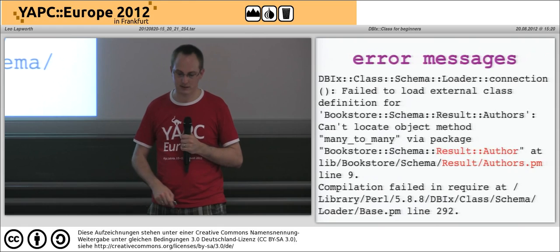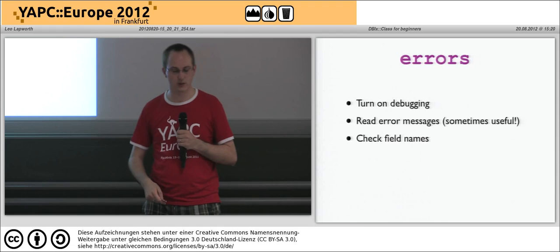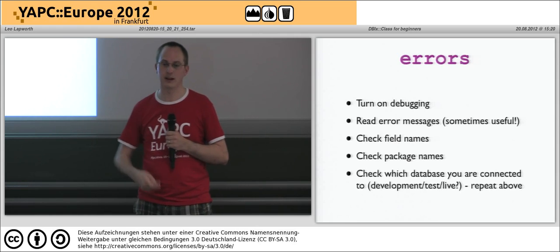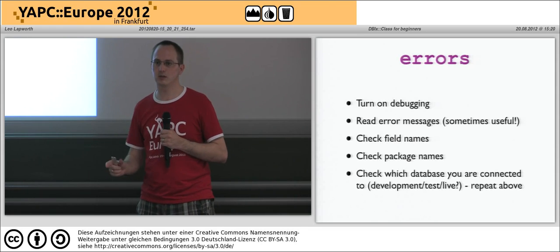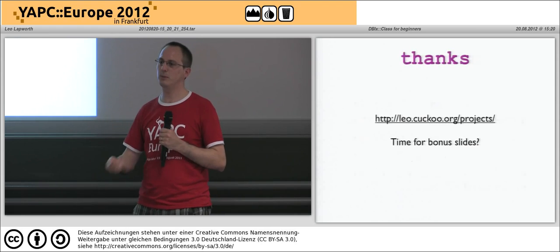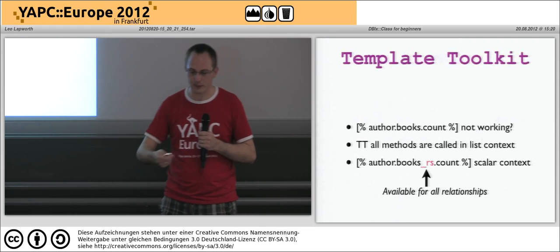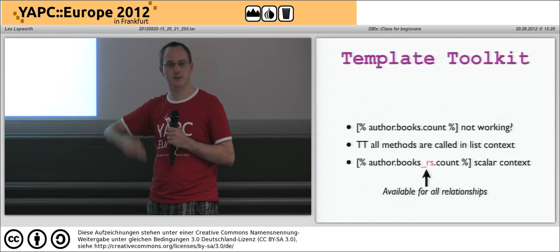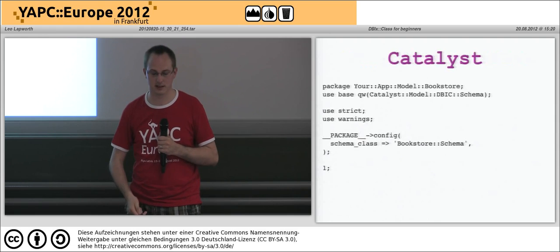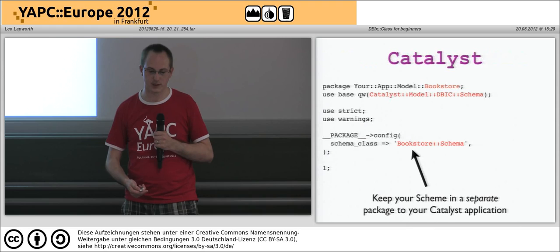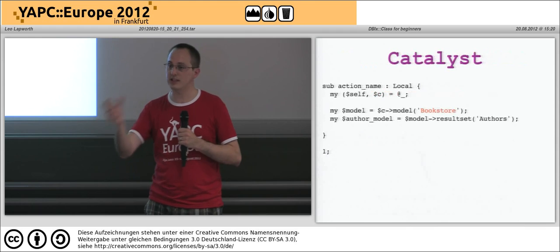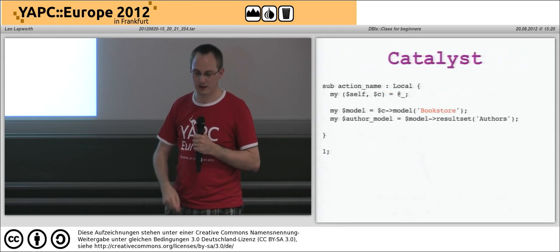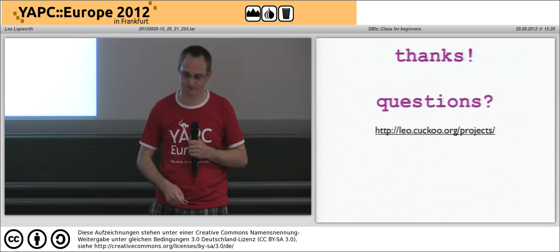For errors, read them closely - things like whether it's plural or singular. Turn on debugging, read those error messages, check all field names, and check package names. Also check which database you're connecting to. When using Template Toolkit, always use the result set because Template Toolkit deals with variables in list context. With Catalyst you can integrate DBIx::Class directly as a model using Catalyst::Model::DBIC::Schema - just tell it the name of your schema, and within your Catalyst controller or model you call model on it and access it directly. Hopefully you can see that it's a very powerful tool. Thank you.